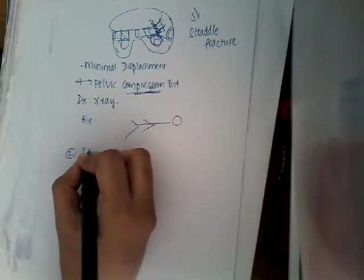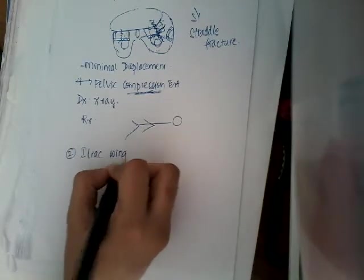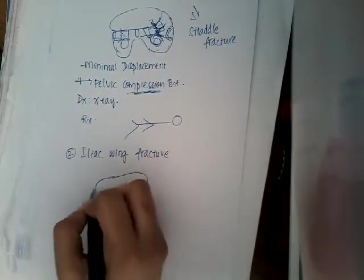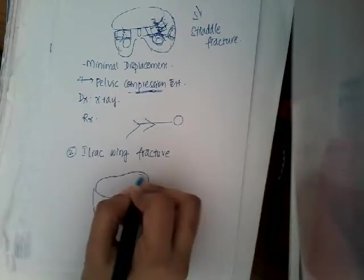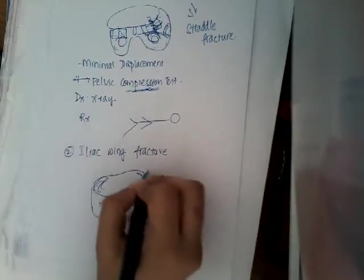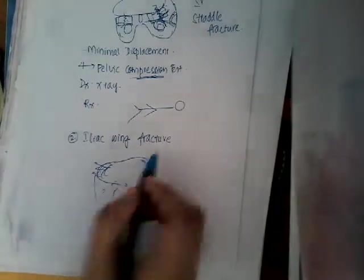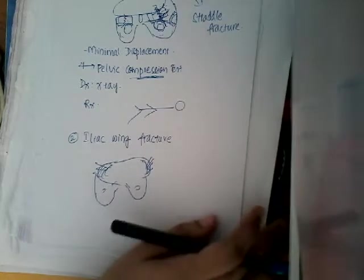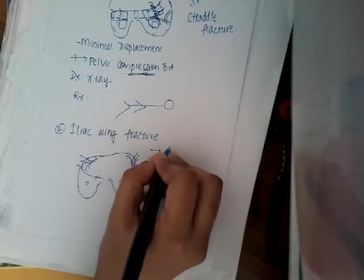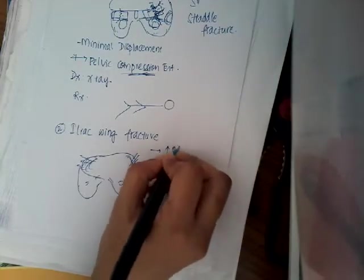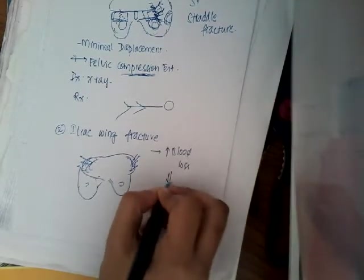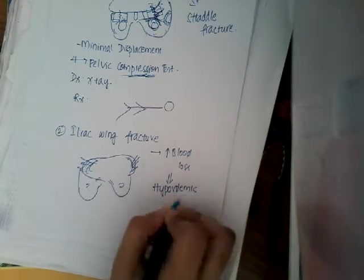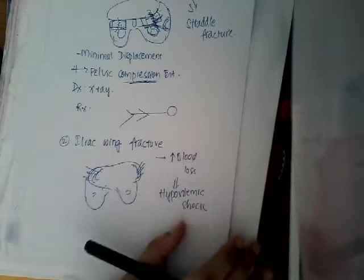The second subtype of Type A is iliac wing fracture, where the fracture is in the iliac wings — the wing of the ilium. There are blood vessels in this region, so there is increased blood loss. Whenever there is blood loss in an iliac wing fracture, this can lead to hypovolemic shock. Don't forget that hypovolemic shock is associated with iliac wing fracture.